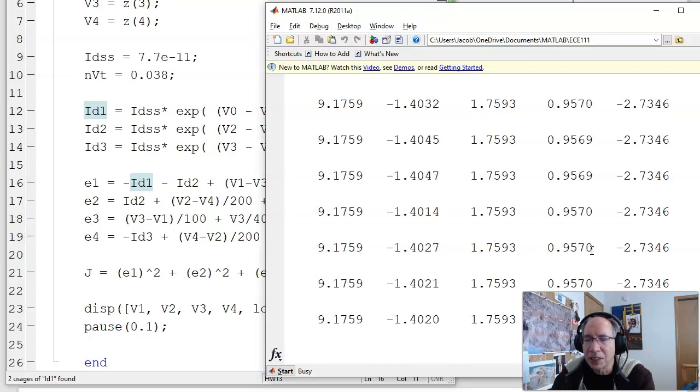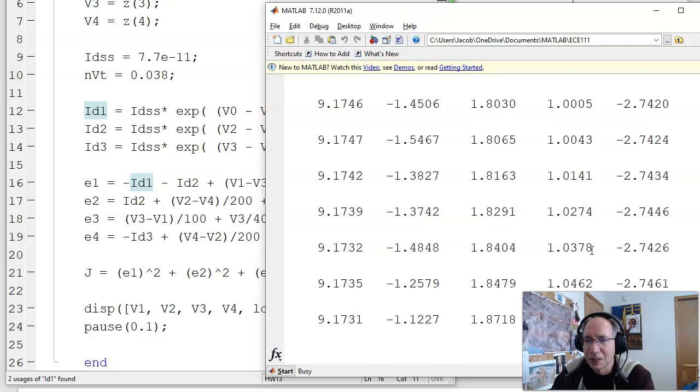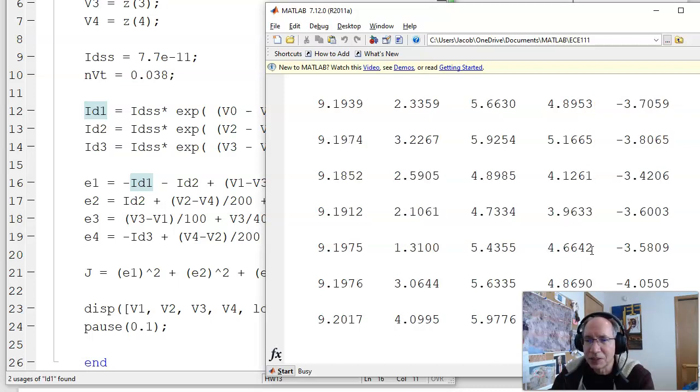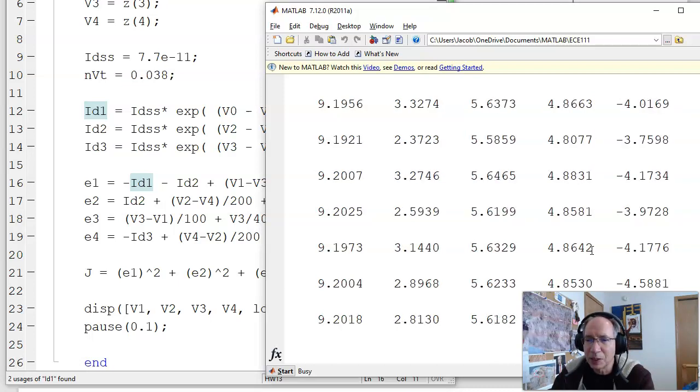Another way to come up with the initial guess is kind of cheat. Solve in CircuitLab. And then plug in the voltages you found in CircuitLab. And this one, you know the answer is not right. The voltages won't be negative. But it's, again, a hard nonlinear problem. It's trying.